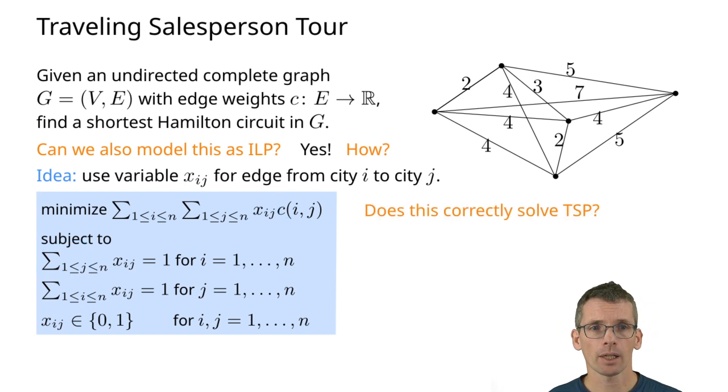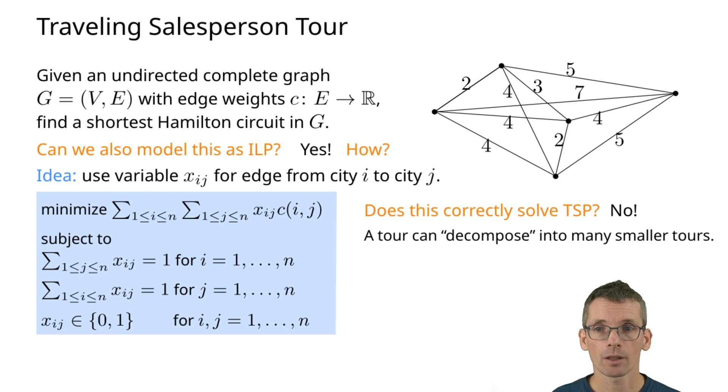Does this correctly solve the TSP? Unfortunately, this is not the case because we can still get a solution to this which is not actually a tour. Let me give you an example. Let's say I have these cities. Of course I would like to have a tour that goes through all cities, but I could have a solution which visits those four cities and those four cities, and then the constraints would still be fulfilled because for every city I once go into it and I leave it once. I could have several cycles. So how can we avoid this? We're going to see two ways of avoiding this.